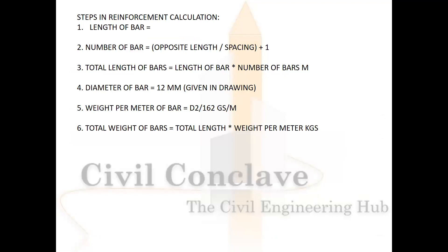Steps in reinforcement calculation: (1) Length of the bar; (2) Number of bars = opposite length / spacing + 1; (3) Total length of bars = length × number of bars in meters; (4) Diameter of the bar as per drawing; (5) Weight per meter = d² / 162; (6) Total weight = total length × weight per meter in kg.